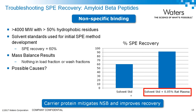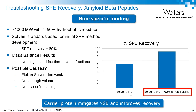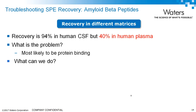Here's a quick example speaking of nonspecific binding — an amyloid beta method. It's a very large, very sticky peptide, so it's common to use solvent standards during method development. When we did that, recovery was 60%. We checked the mass balance — looked at elution recovery, load fractions, wash fractions — and didn't find anything. The most likely cause, given the characteristics of this large sticky peptide, was nonspecific binding. Once we added carrier protein, recovery went right up over 90%.